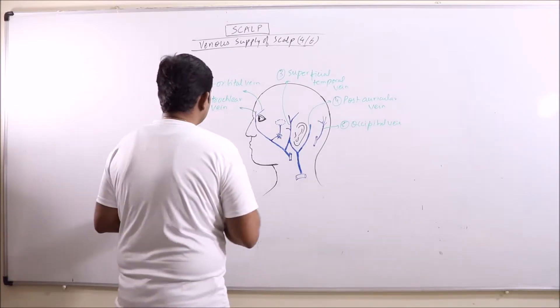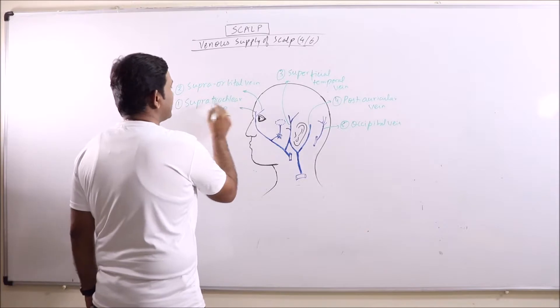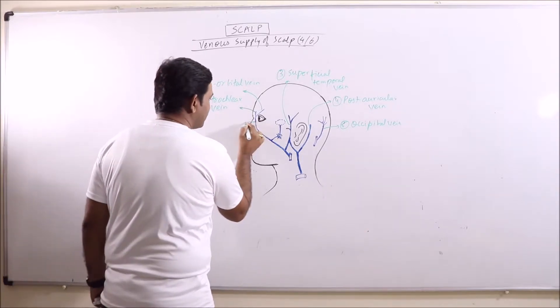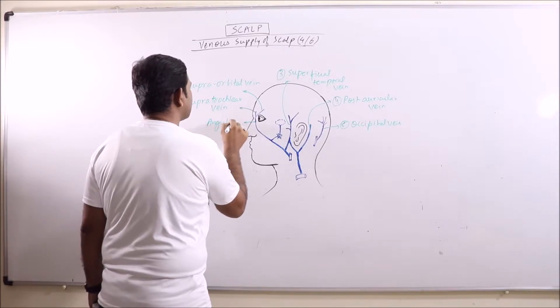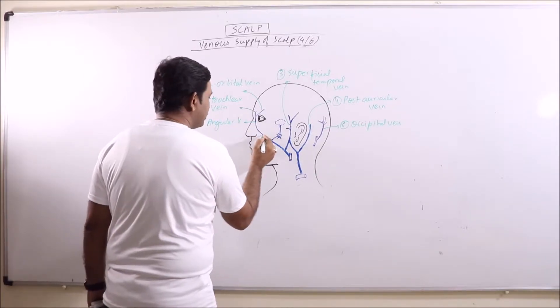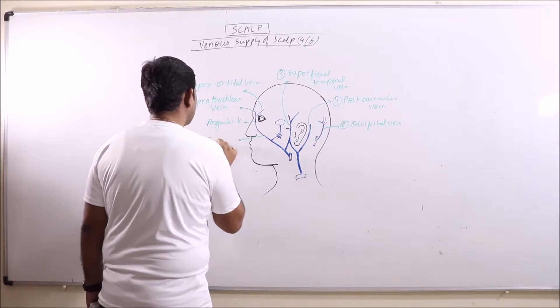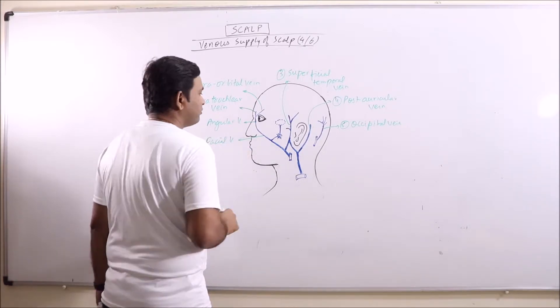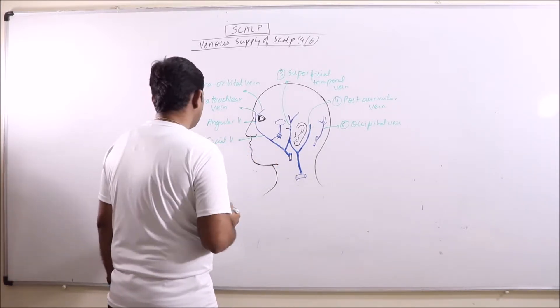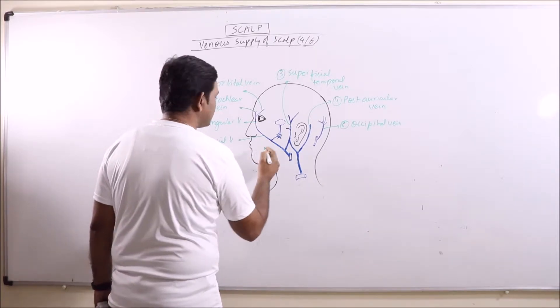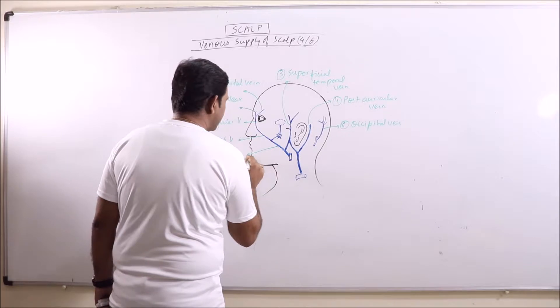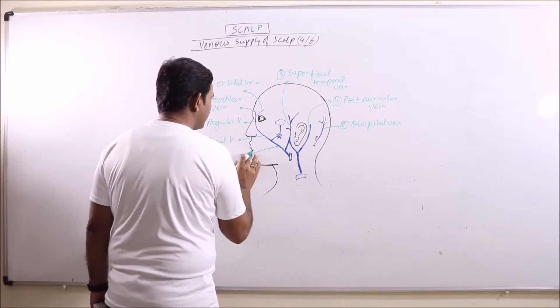Now these supra-orbital vein and the supra-trochlear vein, these combine to form the angular vein which continues as facial vein. Some branches from pterygoid plexus may enter the facial vein. Then this is again the continuity of facial vein.